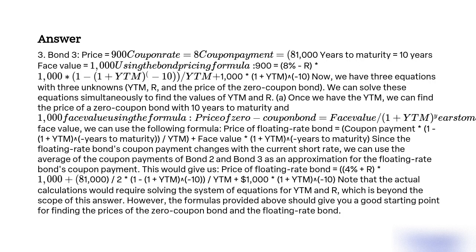Bond 3: Price equals $900. Coupon rate equals 8% minus the current short rate r, so coupon payment equals (8% − r) × $1,000. Years to maturity equals 10 years. Face value equals $1,000. Using the bond pricing formula: $900 = (8% − r) × $1,000 × (1 − (1 + YTM)^−10) / YTM + $1,000 × (1 + YTM)^−10.